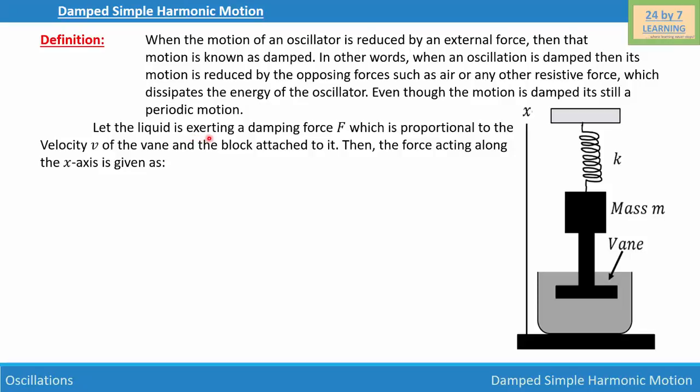Then we can write: let the liquid exert a damping force F which is proportional to the velocity V of the vane and the block attached to it. Then the force acting along the x-axis is given as F = -bV. If we attach a body of mass m with a vane and spring, and the spring is moving, there will be a force acting along the x-axis, which is F = -bV.